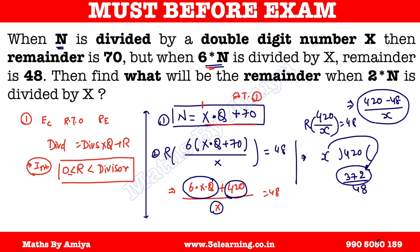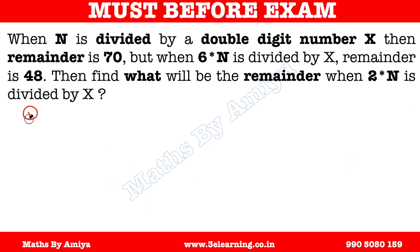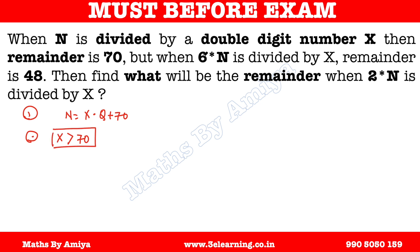Let me repeat all the key things. First, N equals X times Q plus 70. The condition here is that X must be greater than 70 — the divisor will be greater than 70. When 6 times N is divided by X and the remainder is 48, we get 6 times 70 minus 48 equals 420 minus 48 equals 372.